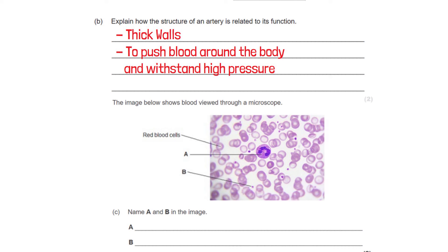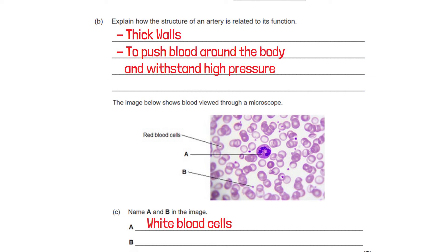The image you can see on screen shows blood viewed through a microscope and it's asking us to name A and B. Well we already know what the red blood cells look like so A has to be the white blood cells because white blood cells are larger than red blood cells. This means B has to either be platelets or plasma. Well plasma is just a fluid that the cells are submerged in so the answer must be platelets.